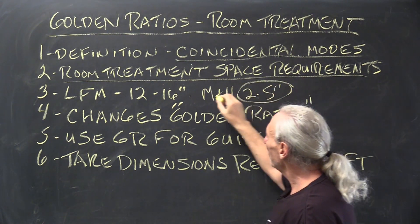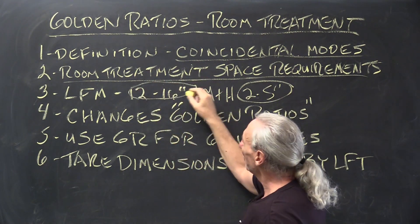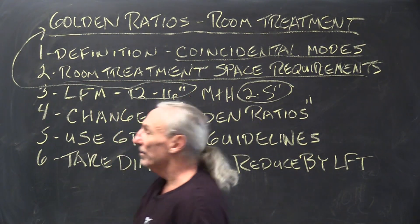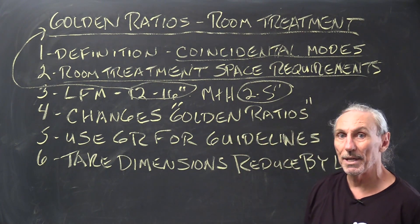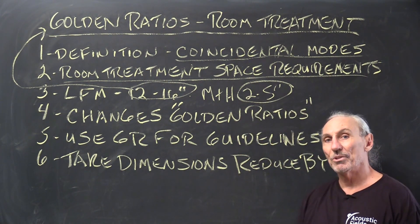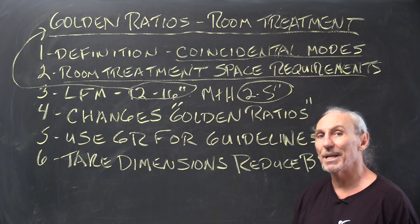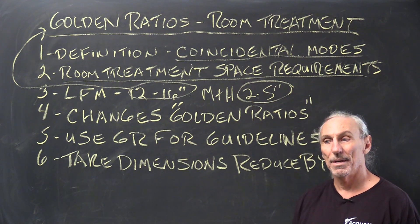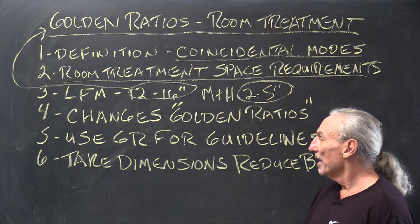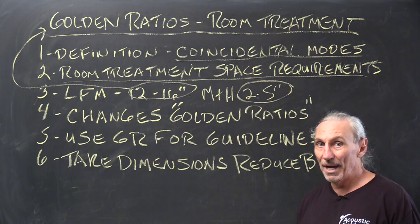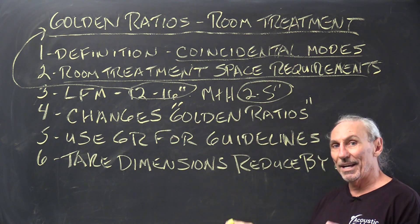So these dimensions then have to be calculated into the golden ratio you've chosen in the beginning because none of these golden ratios have any space requirements indicated for treatment. They're just rough calculations. So they're good to use as guidelines but let's add a caveat.